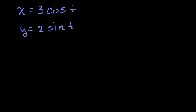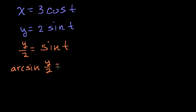Let's solve for t here. We could do it in either one. They're equally complex. If we solve for t here, divide both sides by 2. You would get y over 2 is equal to sine of t. And then take the arcsine of both sides, or the inverse sine of both sides, and you would get arcsine of y over 2 is equal to t.